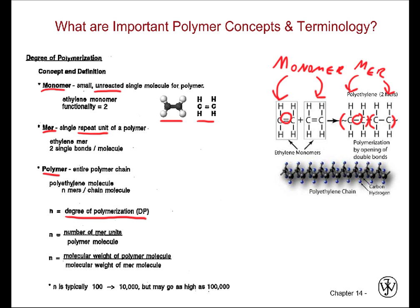The polymer, as stated previously, is the entire chain. The next term is the degree of polymerization. It is abbreviated as a lowercase n, and it is a measure of the number of mer units per polymer molecule. It is also found by dividing the molecular weight of the polymer molecule by the molecular weight of the mer molecule.